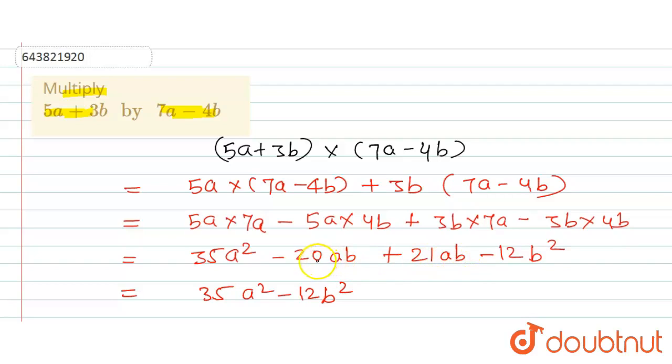These are the like terms, so here we will take out the minus 20 plus 21, so this becomes plus ab. Here, number will be subtracted, that is minus 20 plus 21 becomes 1, so 1 times ab is plus ab. So this is the answer for this question.